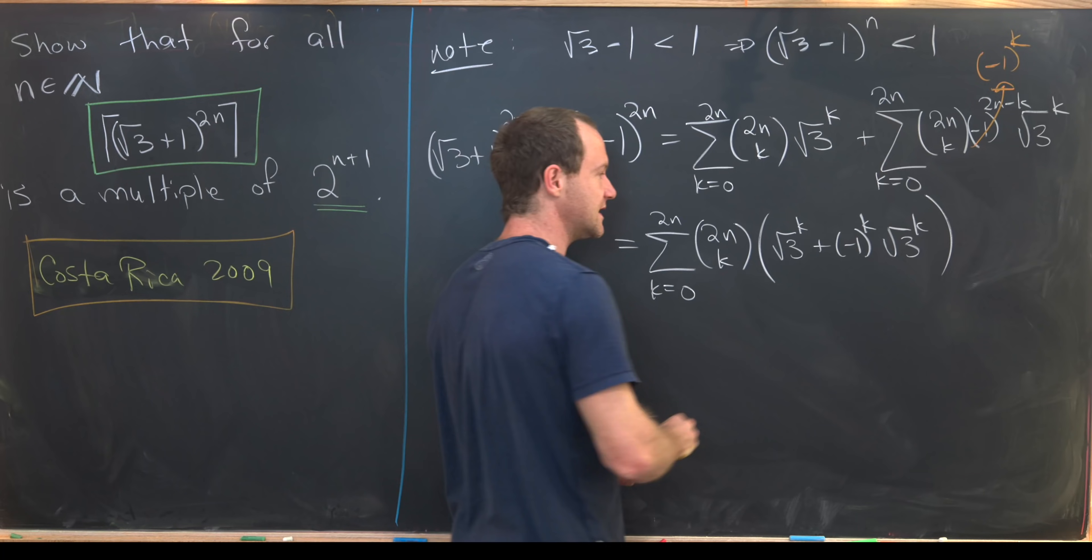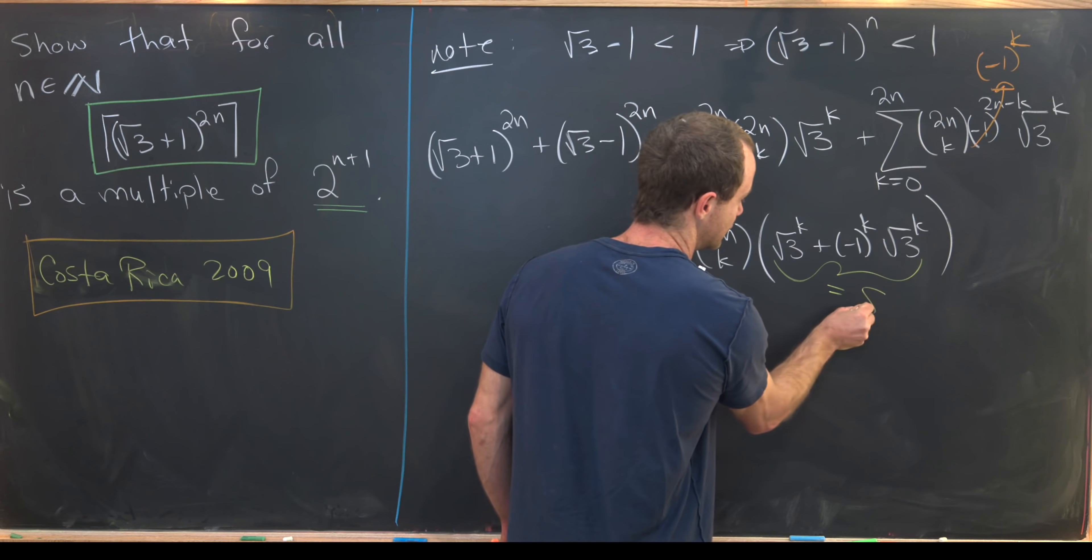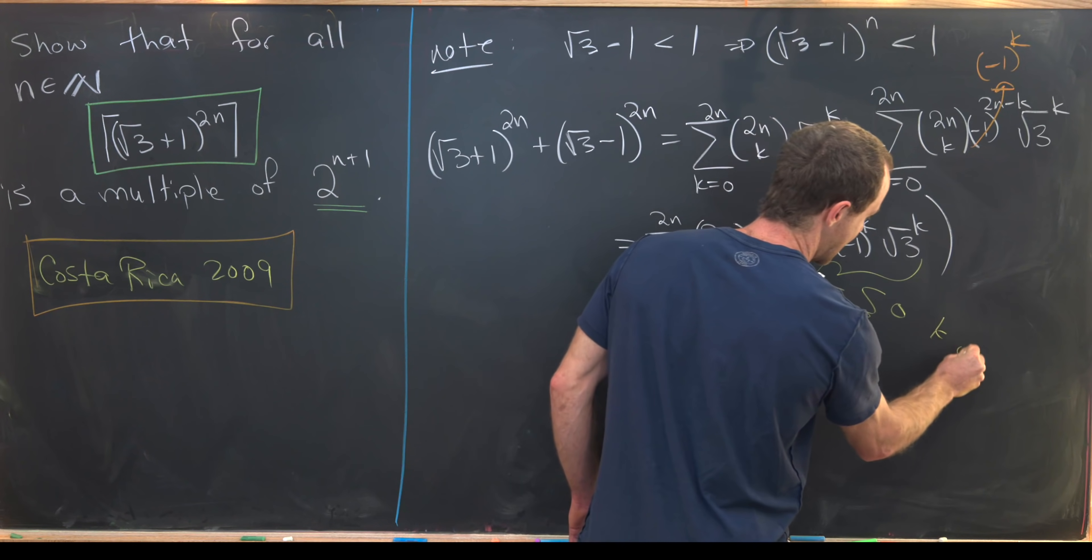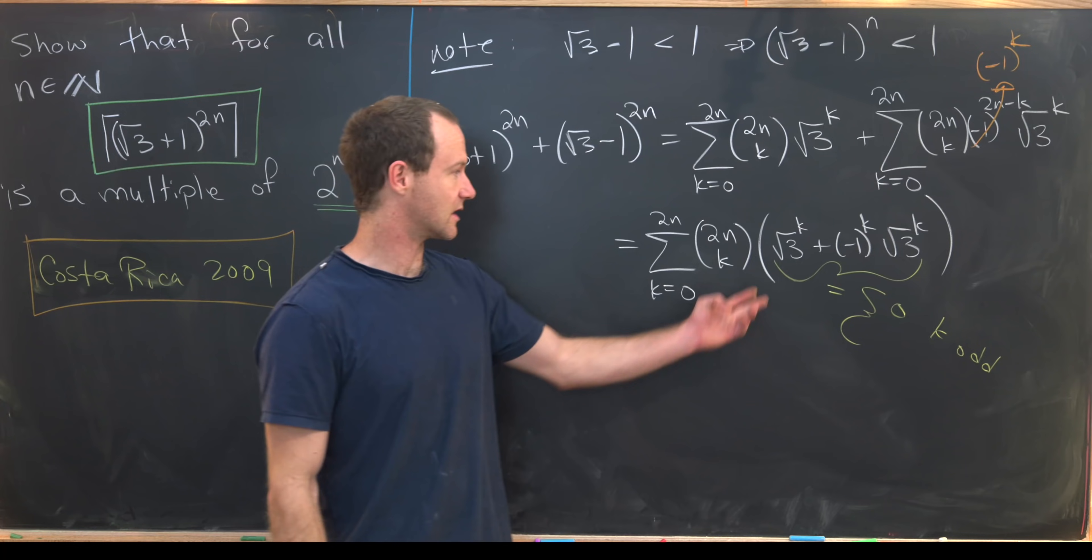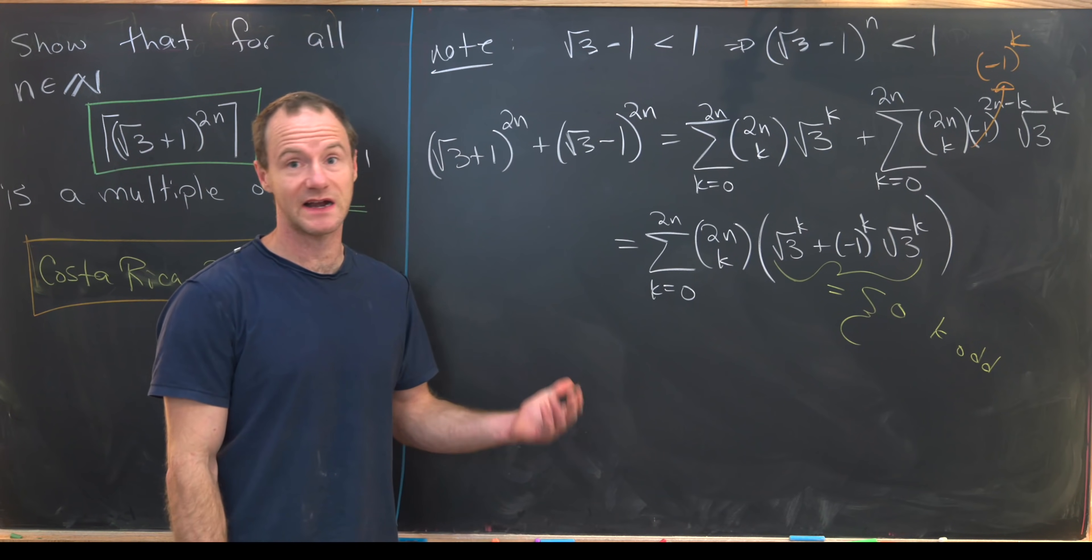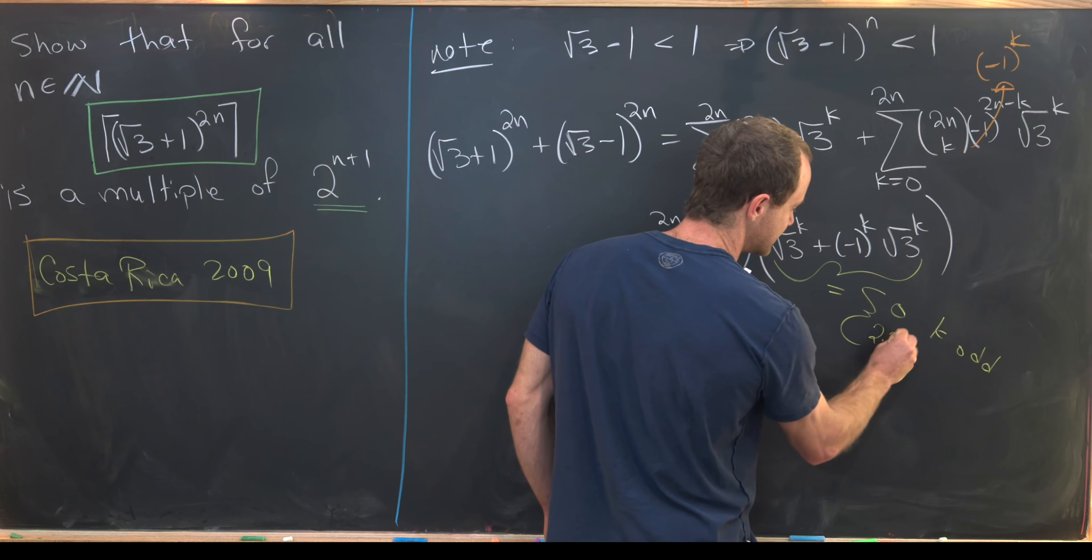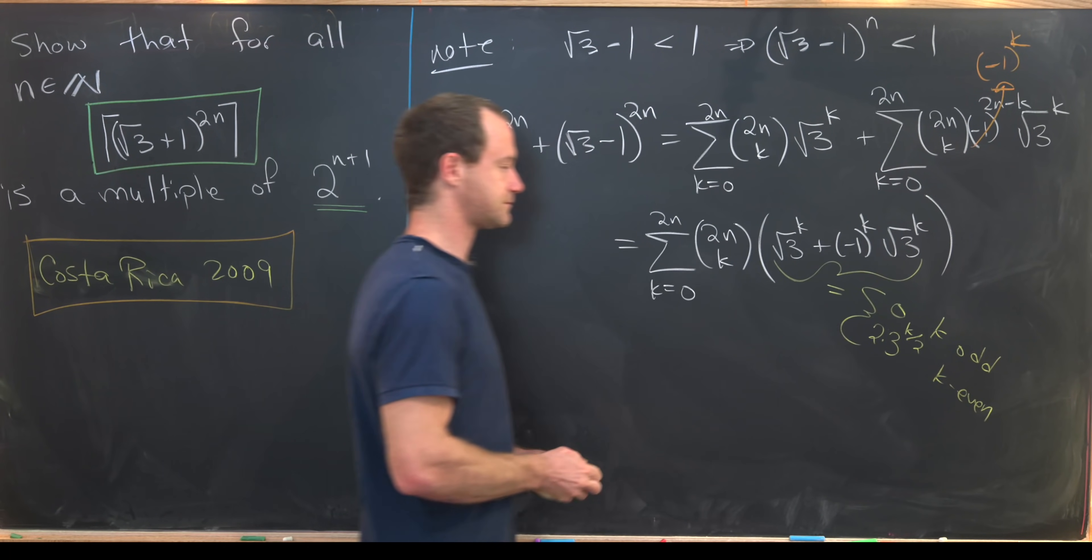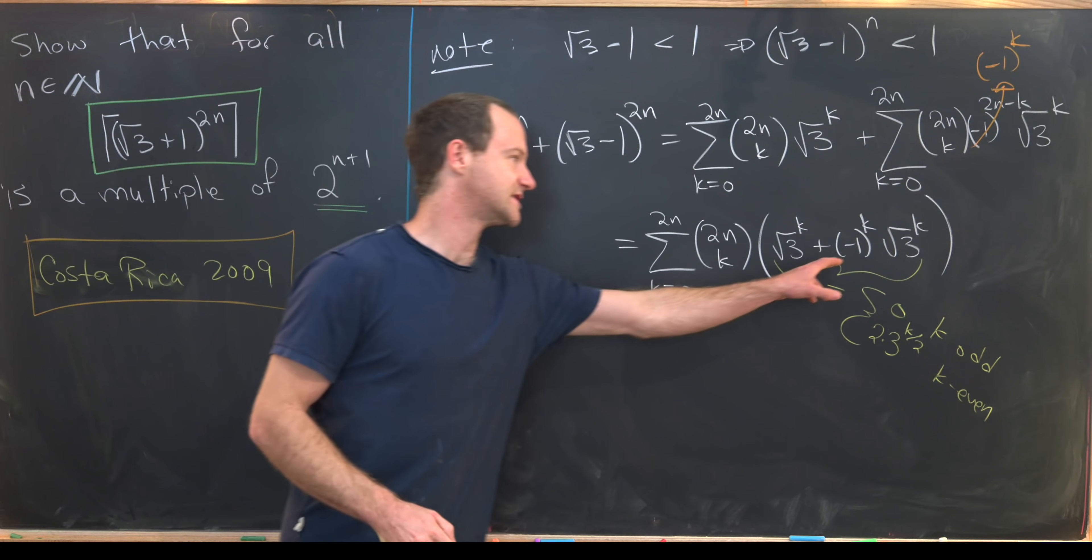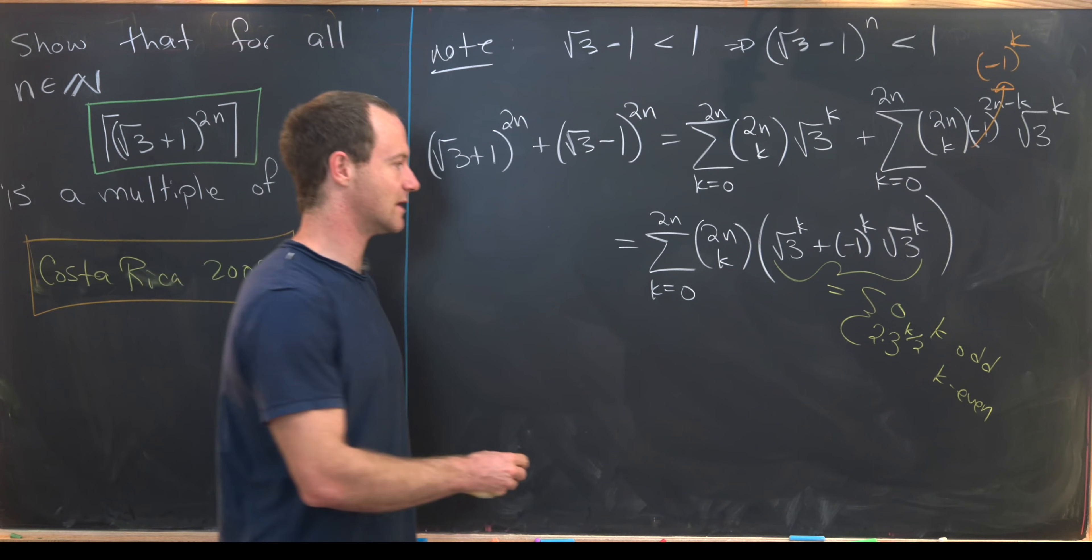But it's pretty clear that this object right here is equal to 0 if k is odd. Well, that's because you get a minus sign here and then you'll have root 3k minus root 3k. That cancels. And it's equal to 2 times 3 to the k over 2 if k is even. Well, in that case you get minus 1 to an even number which is just plus 1 and then that doubles up.